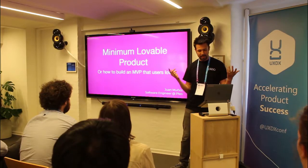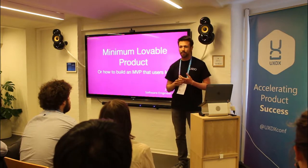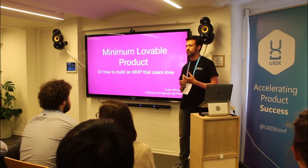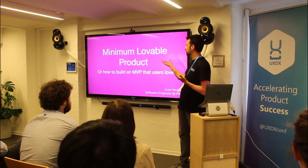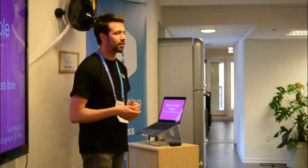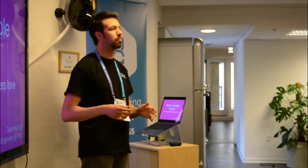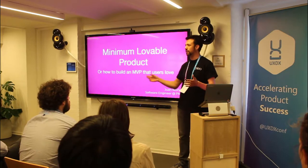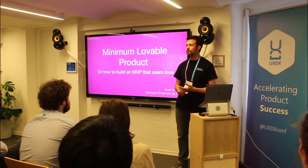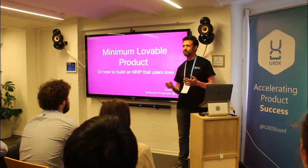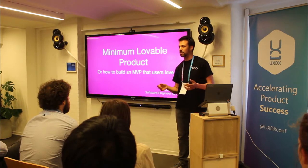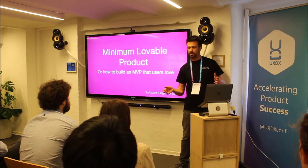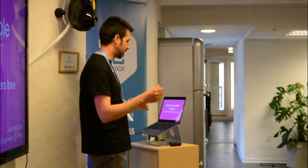So, a minimum lovable product — or how to build an MVP that users love. Usually the minimum lovable product is just the next step of an MVP. I can call it a complete MVP, with all the features or niceties that we want to add to the MVP. But it's not an MVP — it's the next level.